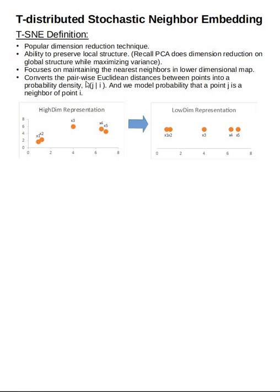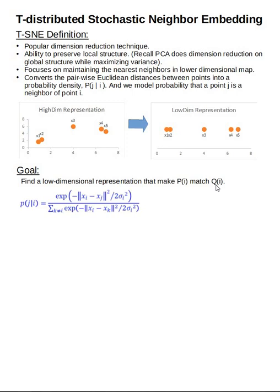Next, let's look at the actual mathematical definitions of the goals. Very subtly put, T-SNE finds a lower-dimensional representation from a higher-dimensional representation that makes Pi match Qi. We will explore in detail what Pi is and what Qi is.